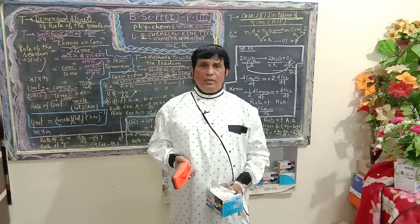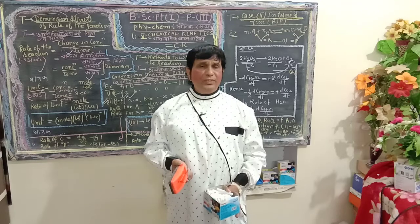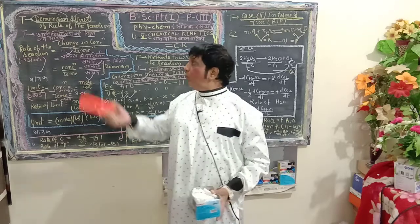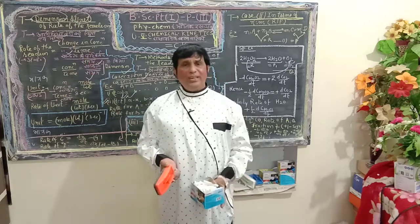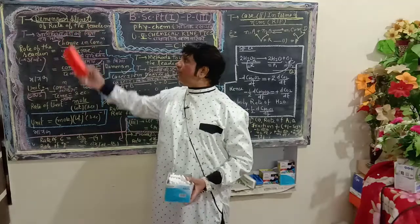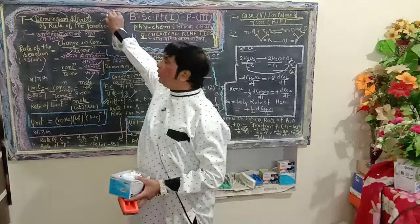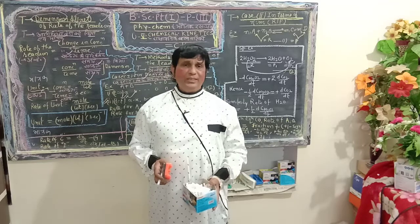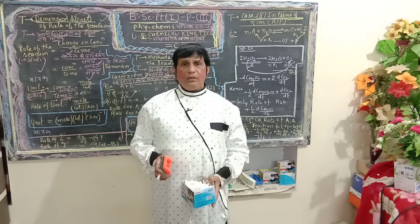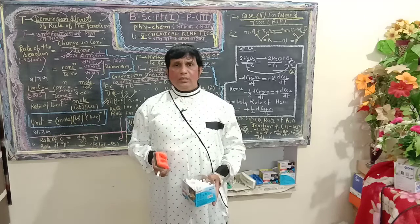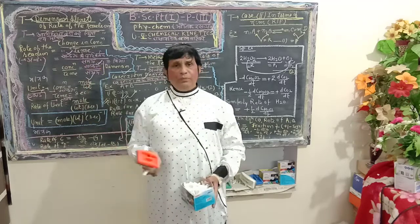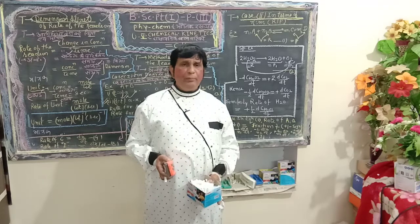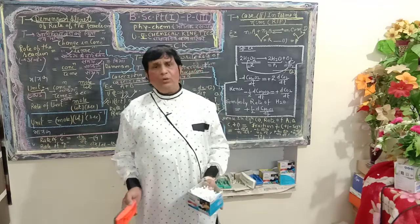Once again, I draw your attention to our previous lecture and focus on the rate of reactions and its definitions, because before proceeding to today's very important topic — dimension and unit of the rate of reaction — I would like to define the rate of reaction or velocity of reaction. Velocity of reaction is defined as the rate of change of concentration of reactant or product with respect to time, also known as the rate of reaction.